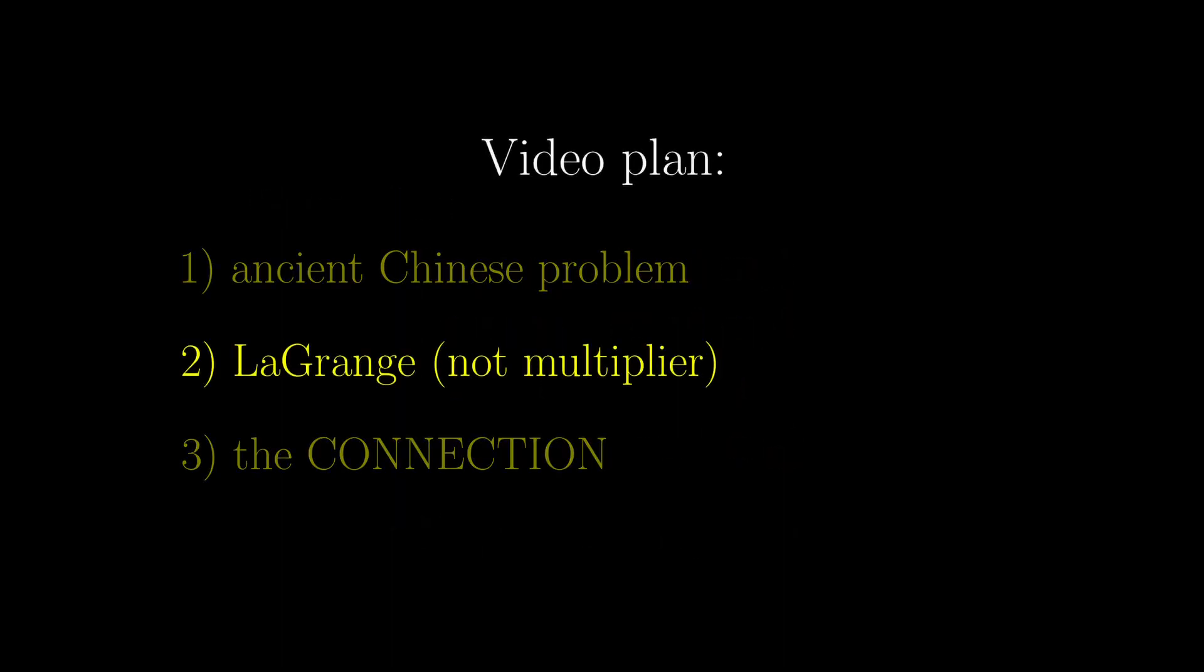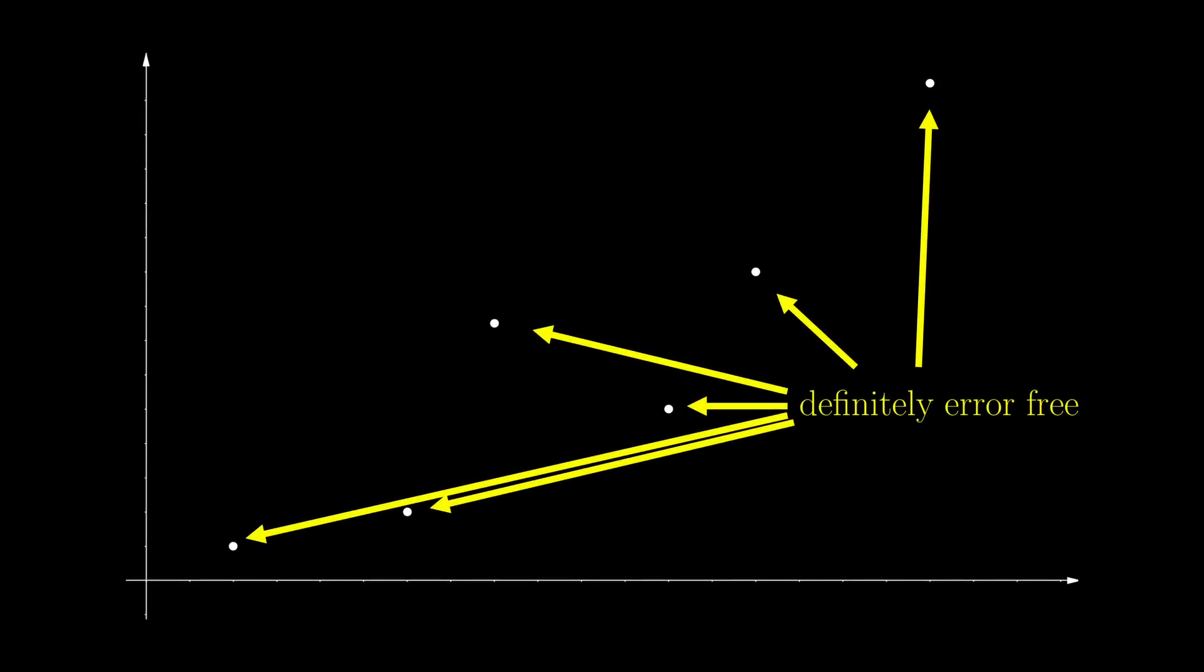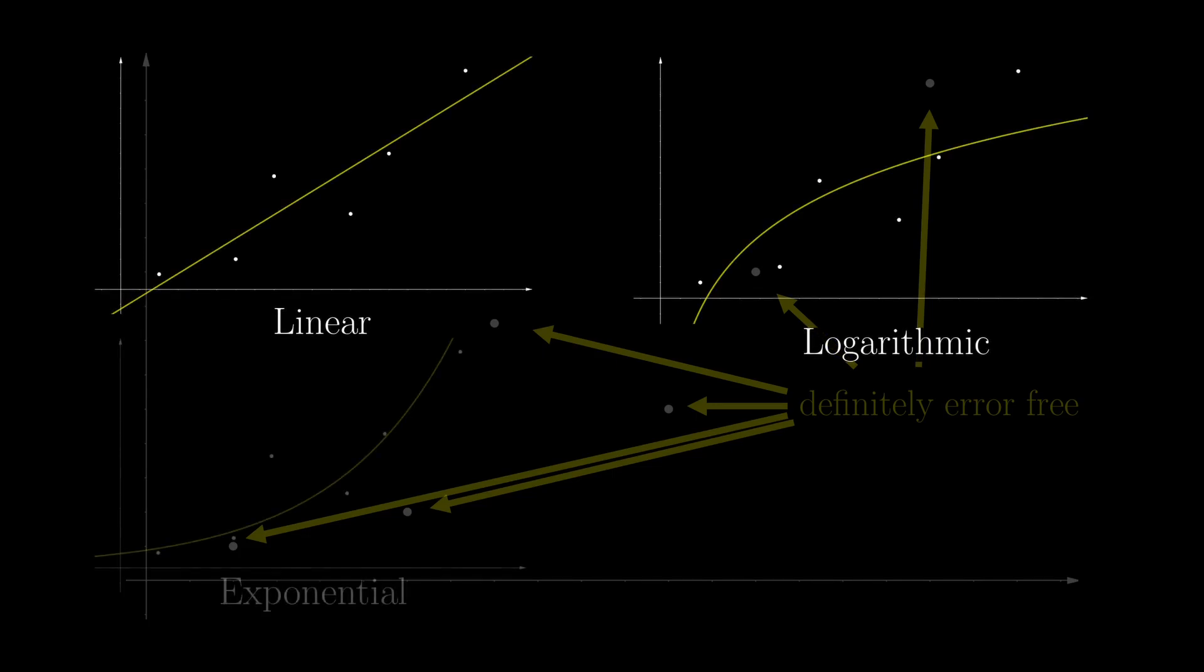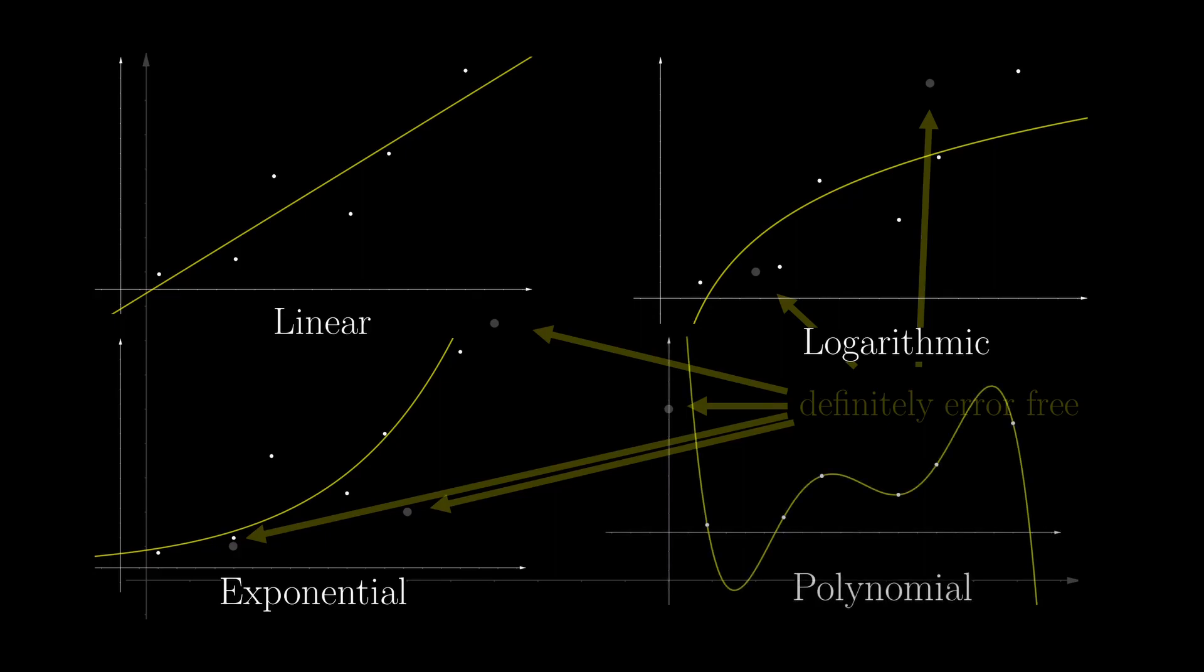One thing that Lagrange is known for is polynomial interpolation. Suppose that you have these different data points, which are absolutely error-free, and you want to figure out the relationship between the two variables. There are tons of different models, like linear, logarithmic, or exponential. But when there are more than three data points, it is not guaranteed that those data points would fit any of those models. Polynomial models are the most versatile, and can fit as many data points as you want.